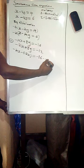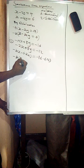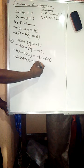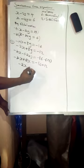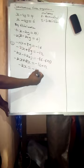Simplifying further: negative 4x minus negative 2x becomes negative 4x plus 2x, which gives negative 2x. On the right side, negative 16 minus negative 12 becomes negative 16 plus 12, which gives negative 4. So we have negative 2x equals negative 4.